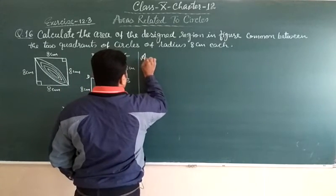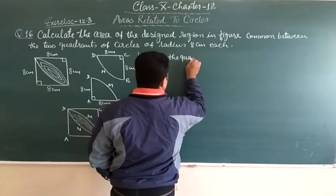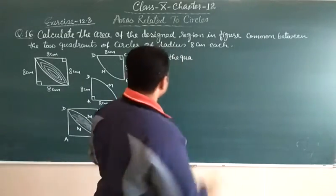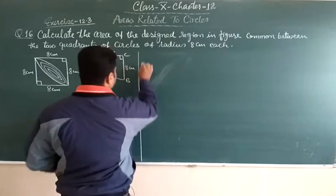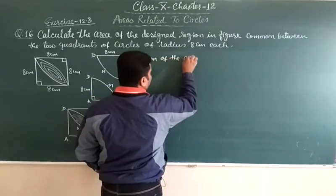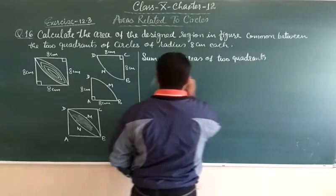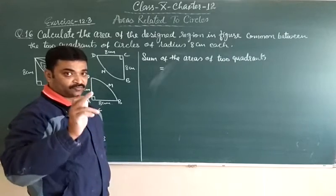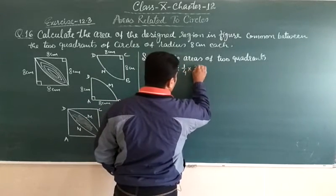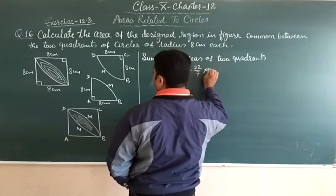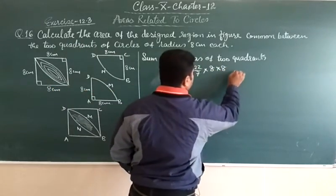Now, sum of the areas of two quadrants is equal to, area of quadrant that means 1 upon 4 into pi r square. So, two quadrants, that is 2 into 1 upon 4 into pi, that is 22 upon 7 into r square, that is 8 centimeter. It is 8 into 8 centimeter square.